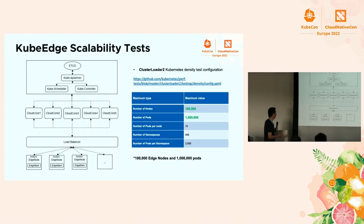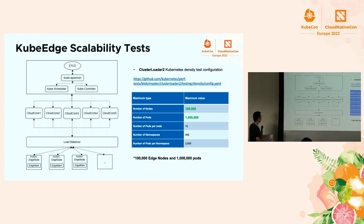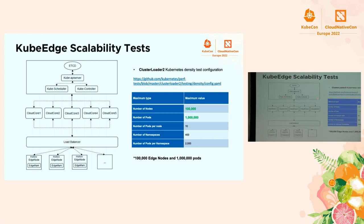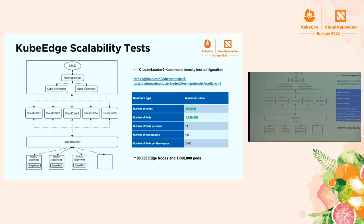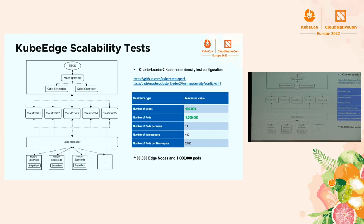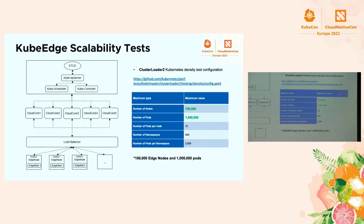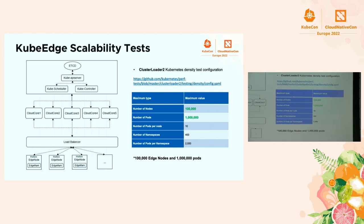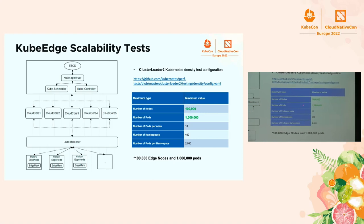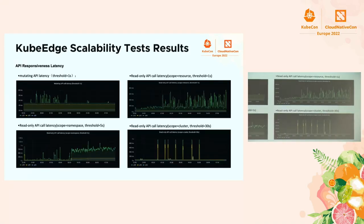According to the Kubernetes SIG Scalability guidance, we ran our scalability capability test. The deployment uses five edge cores, controlling multiple edge nodes through load balancers. We used ClusterLoader2 to test density. The official SIG Scalability configuration was used, and our configuration parameters specify 100,000 nodes and 1 million pods deployed — using the official test matrix.